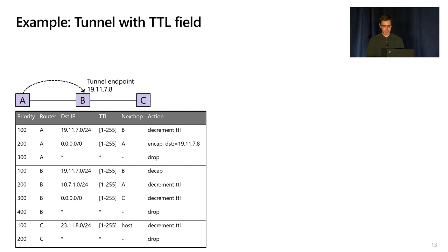Let's take a look at how this works with an example. Here I have a network with three nodes A, B, and C, and I've configured a tunnel between A and B. Let me show how packets would be forwarded in this network. Suppose we have a packet with destination IP of 23.11.8.0 and a time-to-live value of 255. This will match the second rule in the table at A, which encapsulates the packet by copying the top header and then rewriting the destination IP to the tunnel endpoint, which is 19.11.7.8.